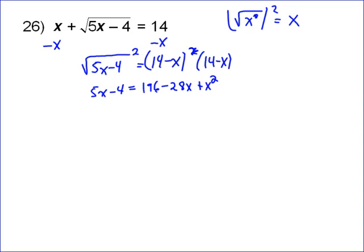Now I've got a quadratic equation, so I need to bring these over here. So I need to subtract 5x and add 4. I'm adding 4 and subtracting 5x at the same time. So that's going to give me 200 minus 33x plus x squared. If I rearrange that just so it looks a little nicer to me, it looks something like this.